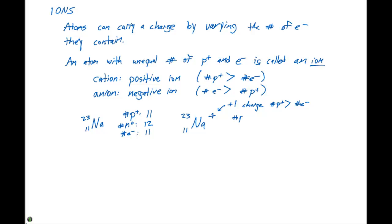The number of protons are still gonna be equal to 11. The number of neutrons are gonna be 23 minus 11, or 12. But the number of electrons in this case are different because we have a plus one charge. This indicates we have one more proton than we do electron. So the number of electrons for this particular cation is gonna be 10, which agrees with the statement that we made for a cation. The number of protons are greater than the number of electrons.